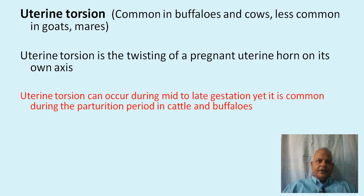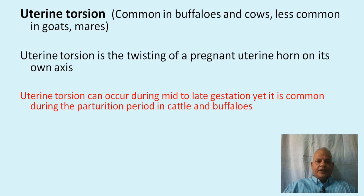Uterine torsion is the twisting of a pregnant uterine horn on its own axis. It is common in buffalos and cattle, and less common in mares and goats. Uterine torsion can occur during mid to late gestation, yet it is most common during the parturition period in cattle and buffalos.